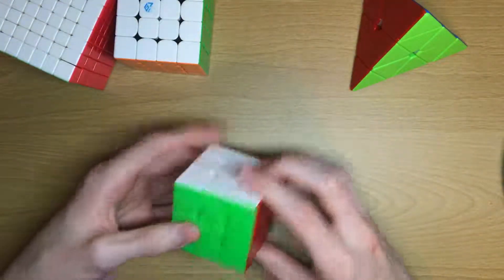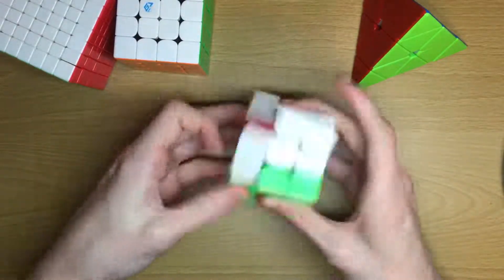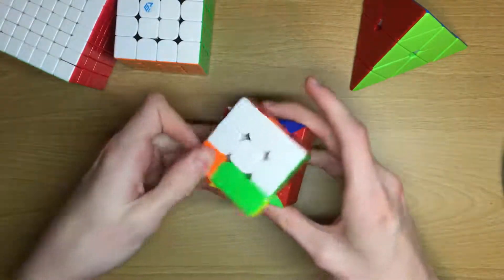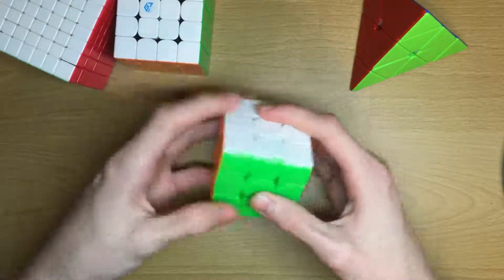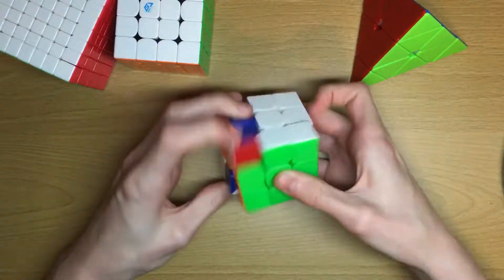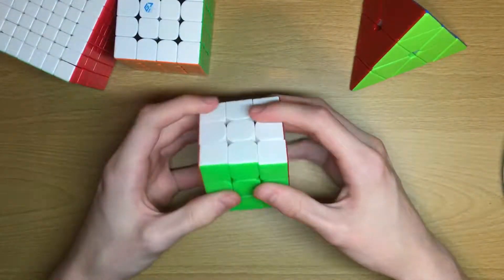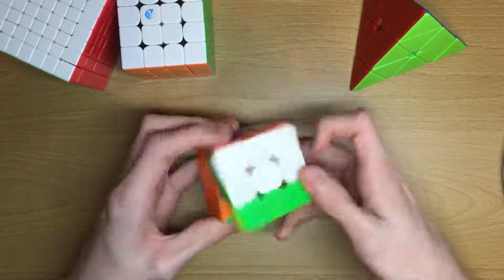For 3x3, I'm using a Little Magic M from the cubicle. Very nice cube. It's very fast right now. I should probably slow that down a little bit. I haven't really been practicing, so hopefully I can get maybe a sub-12 average and a sub-10 single. That'd be nice.